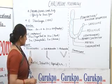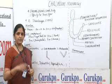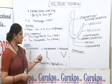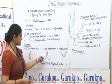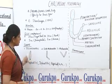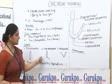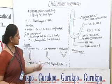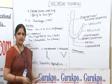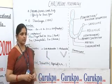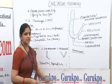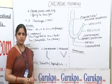Accordingly, during anaphase movement, the chromosome shapes differ: in telocentric, it is rod-shaped; in submetacentric, it is J-shaped; and in metacentric, the chromosome shows a V-shape structure during anaphase movement.